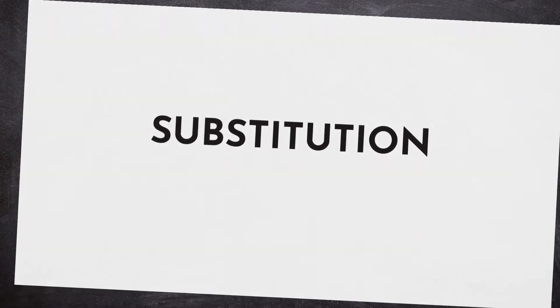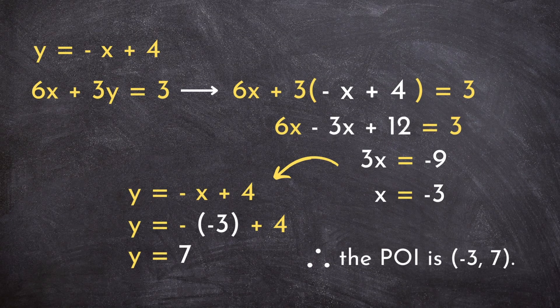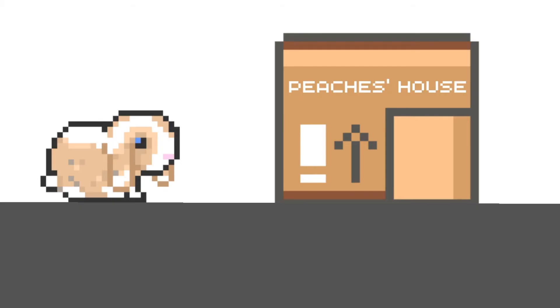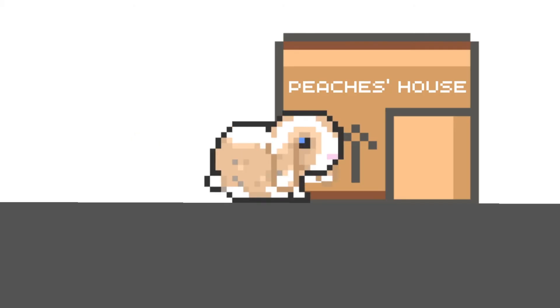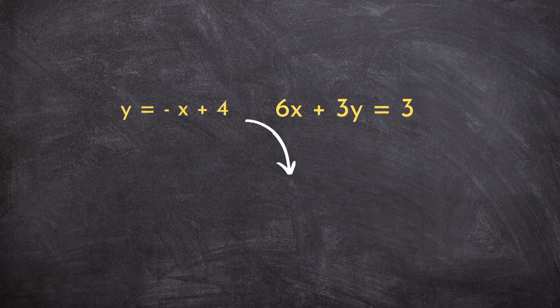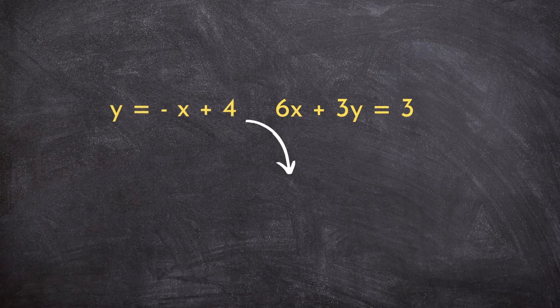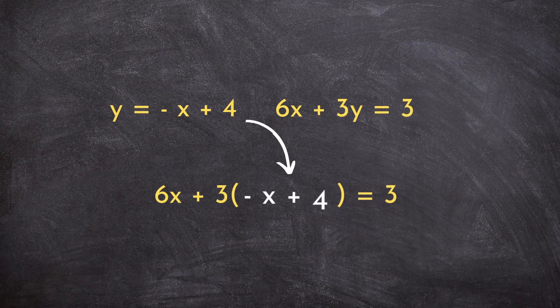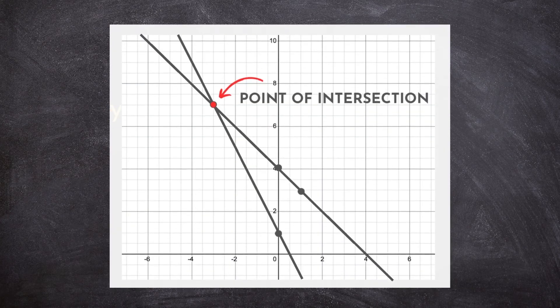This method is called substitution. And while it might sound and look scary, substitution really just means taking something and placing it inside something else. And in our case, this means taking one of the lines in a linear system and substituting it into the other in order to find the point of intersection.